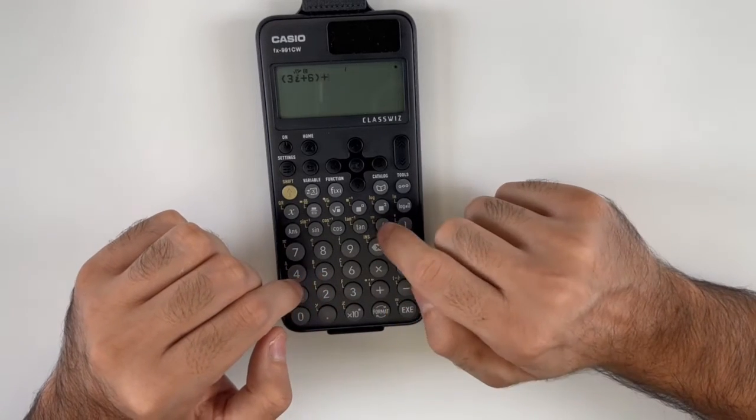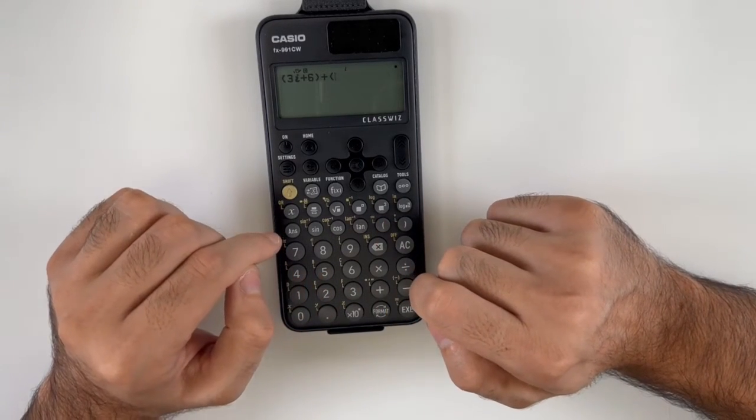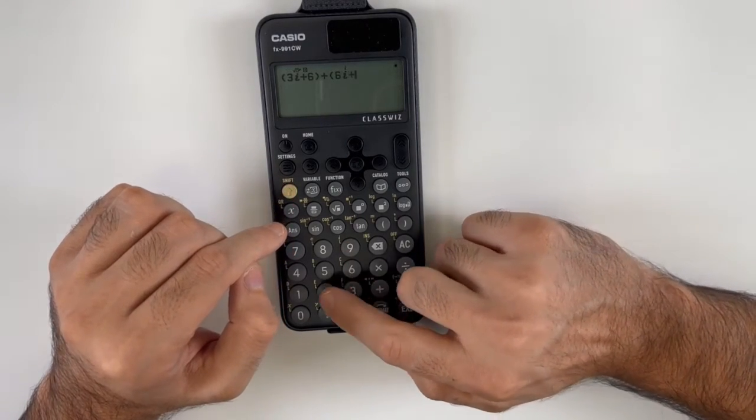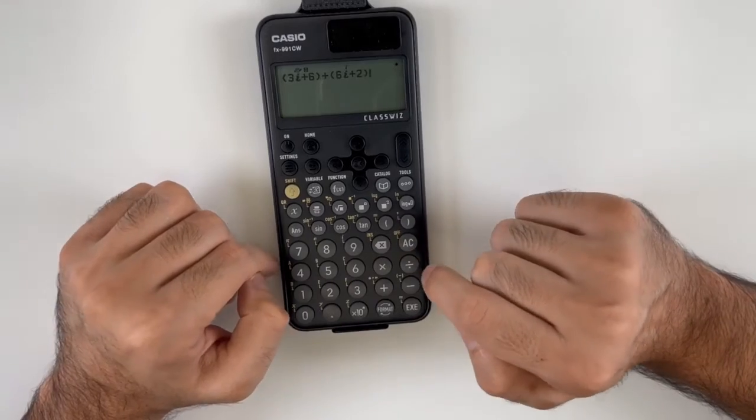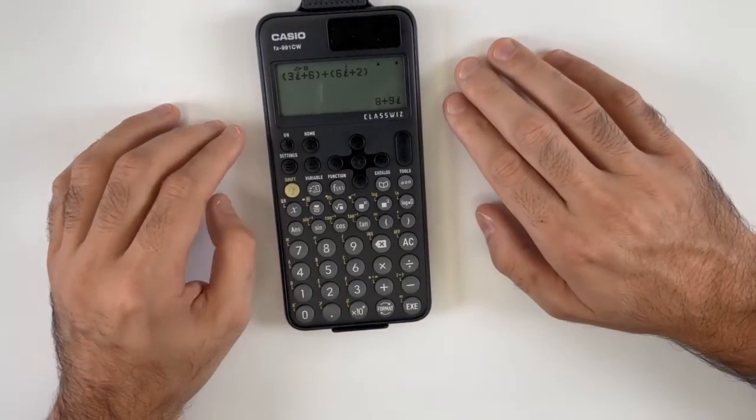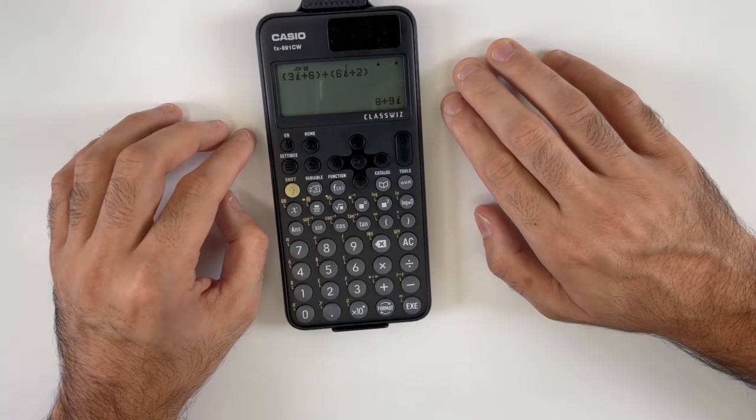Plus, let's take another expression, 6i plus 2. We close the parentheses and we press execute. So the simplified complex number expression is 8 plus 9i.